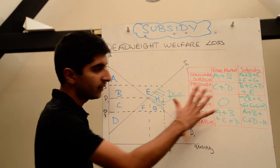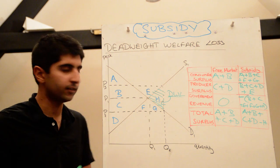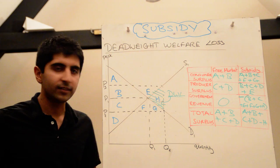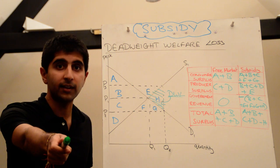Here is the deadweight loss to society as a result of that. So hopefully now as a result of this little box and understanding the different impacts on surpluses and costs and things, you now understand why a deadweight loss is caused when a subsidy is implemented in the market.